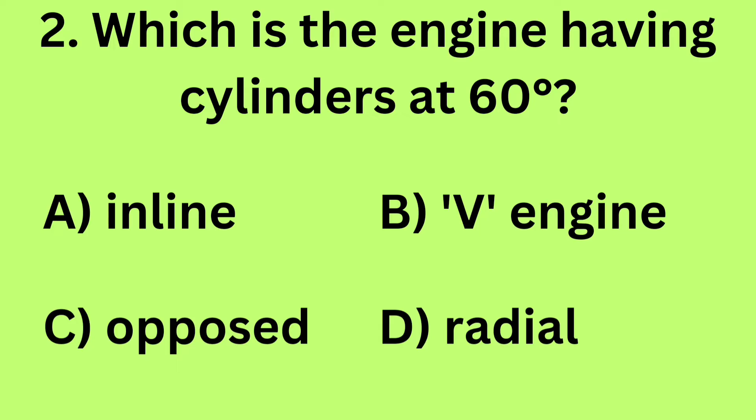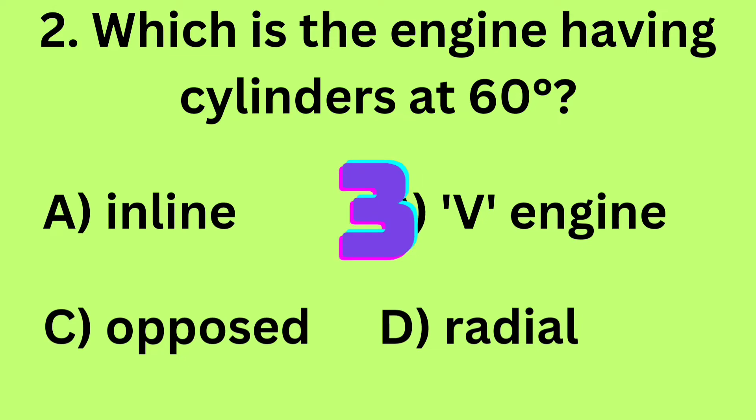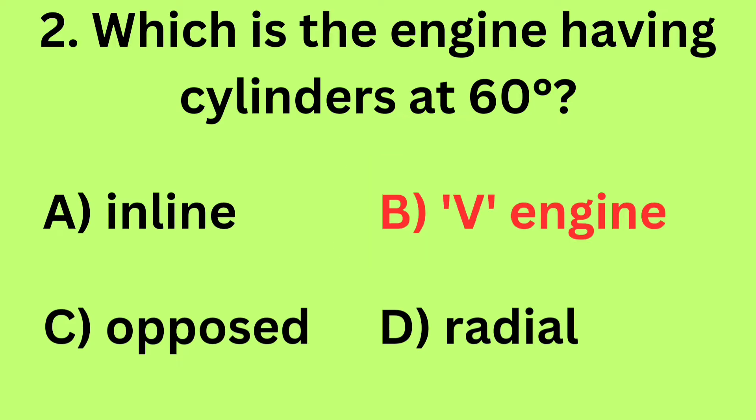Question 2: Which is the engine having cylinders at 60 degrees? A. Inline, B. V Engine, C. Opposed engine, D. Radial engine. Answer: B. V Engine.